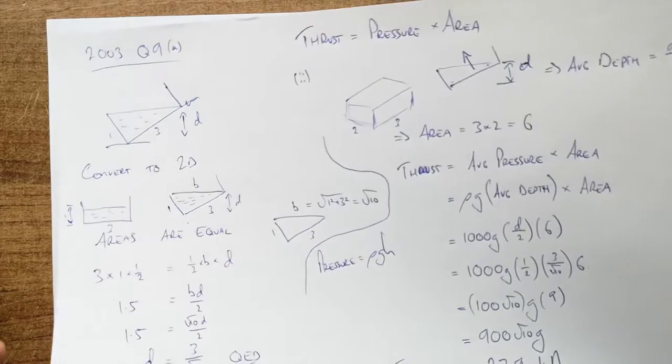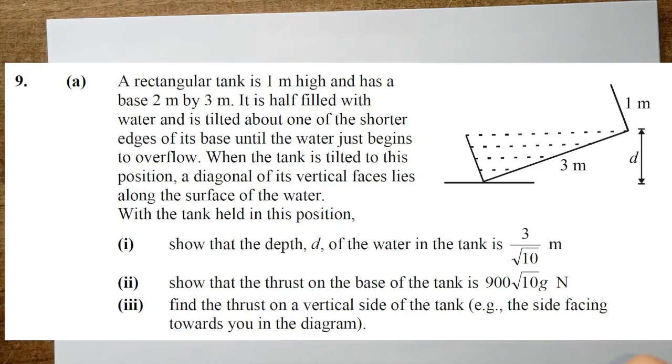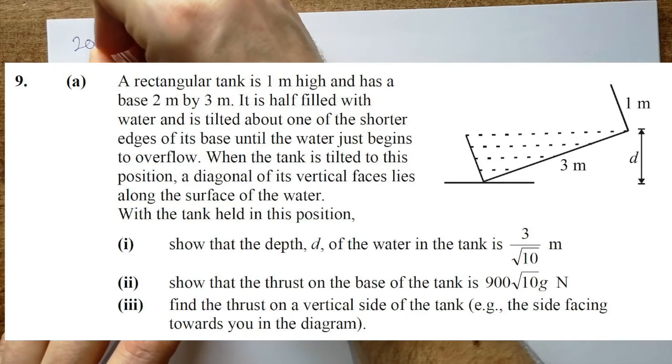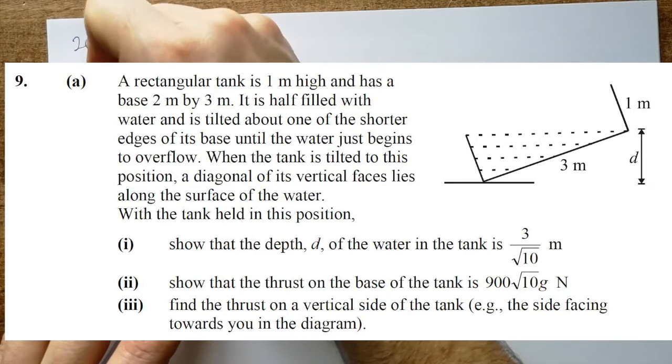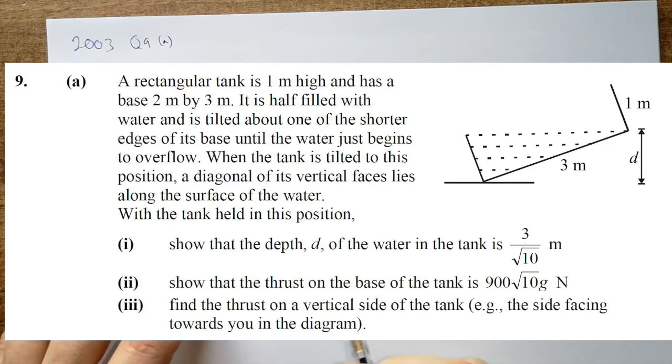The next one is a little bit funkier. Because what we're looking for here, again it's 2003, 9a, this is part three. This is on the base of the tank. Sorry, on the vertical side walls.